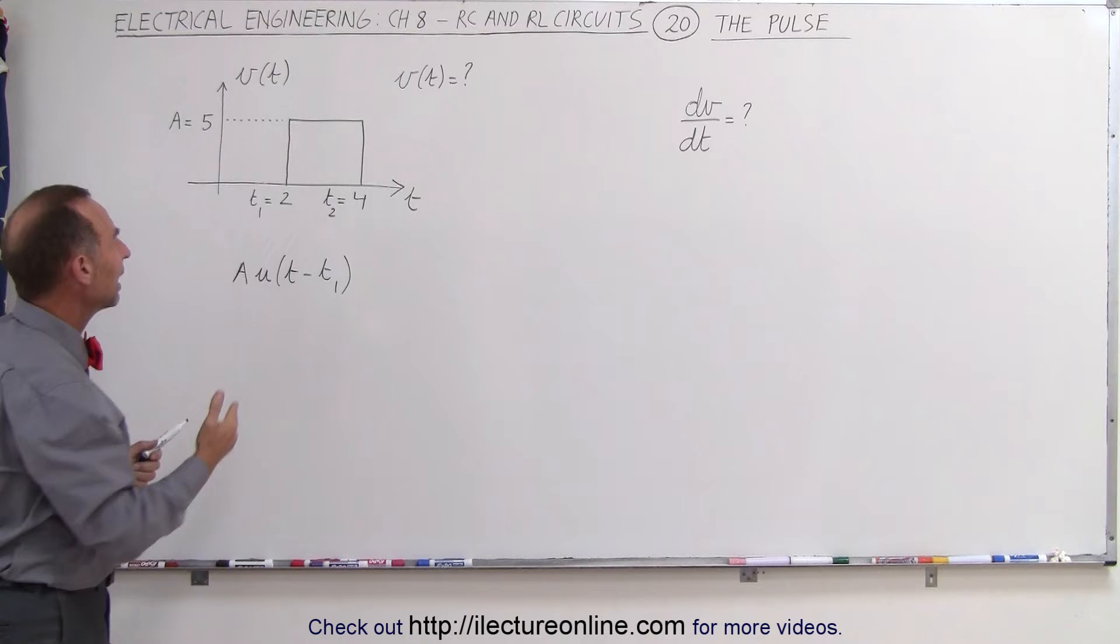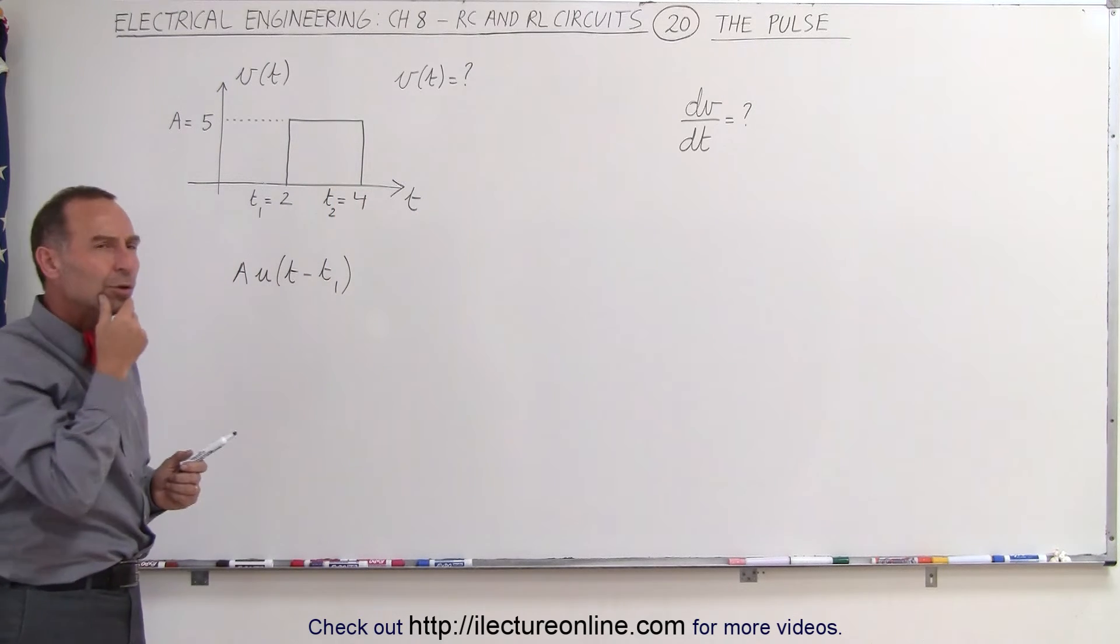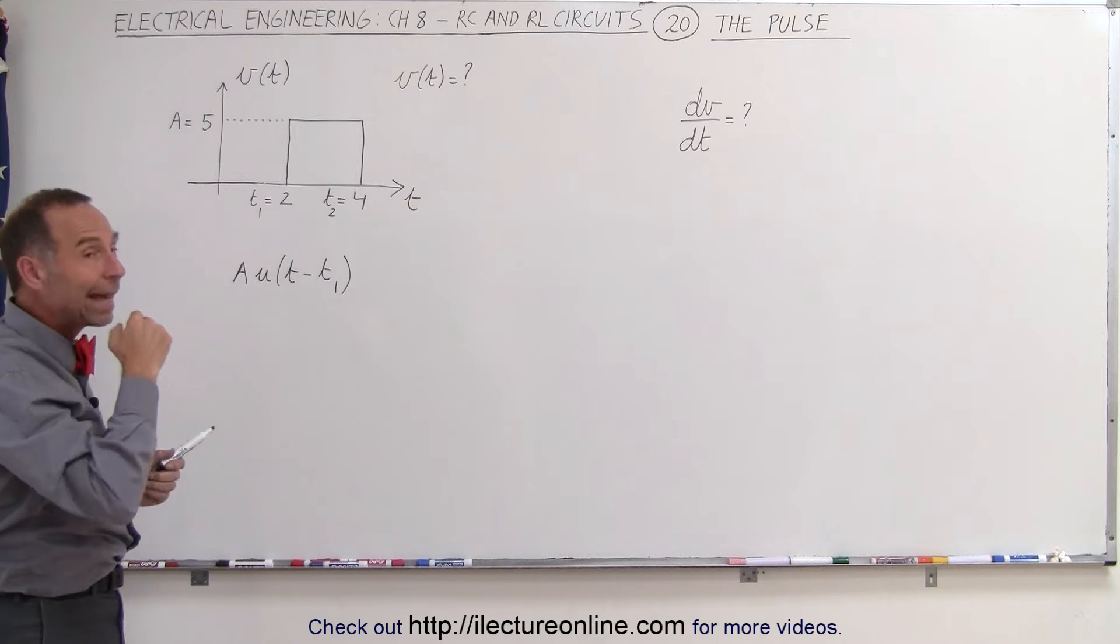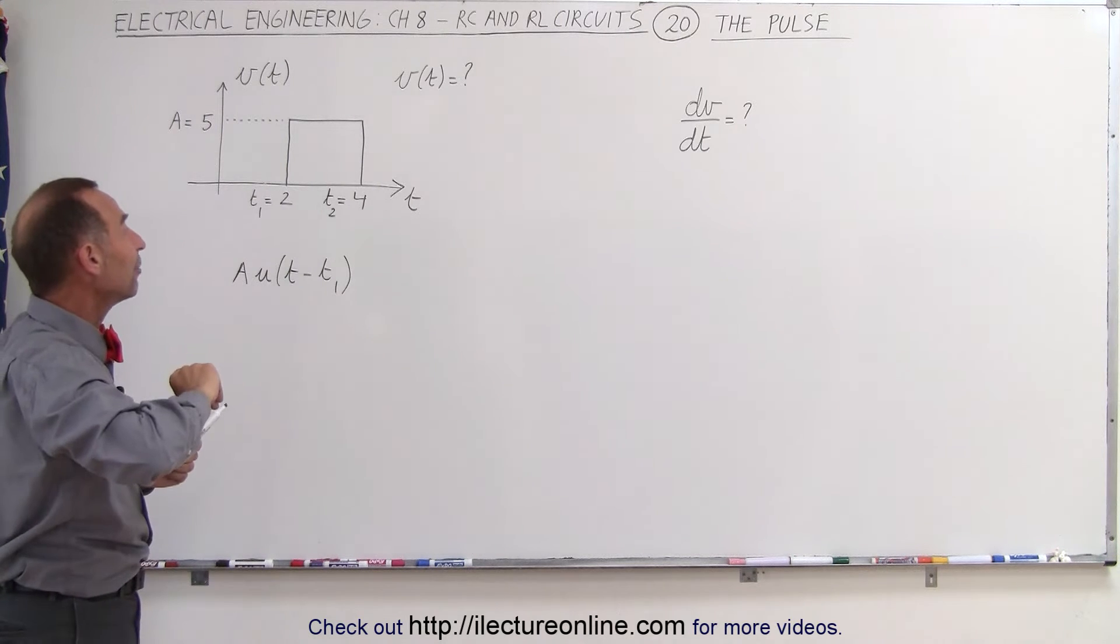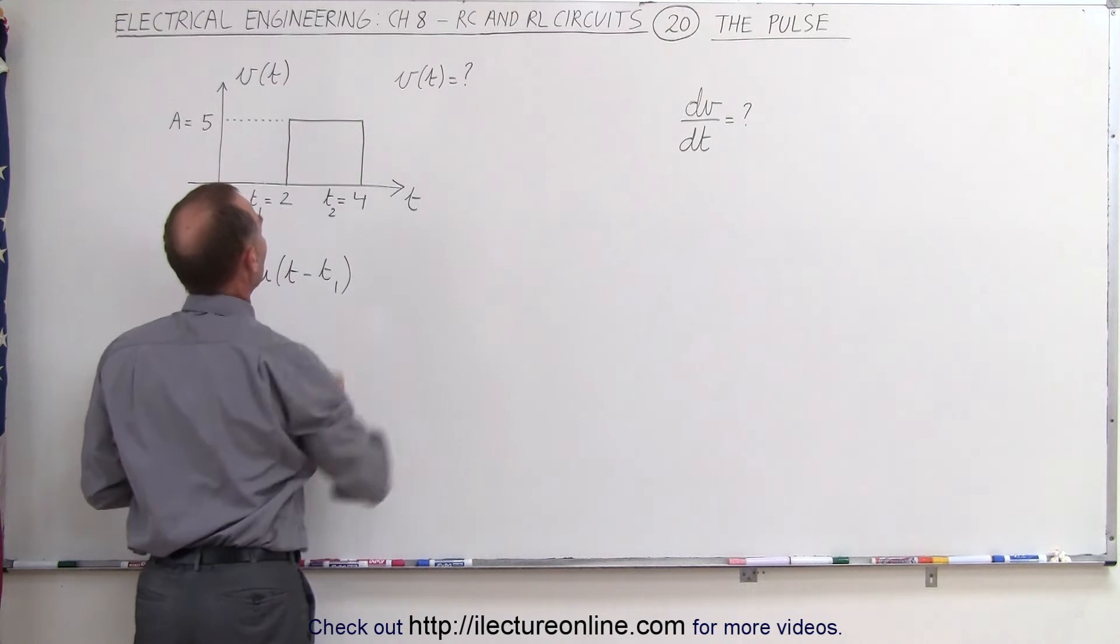Of course it doesn't do that here. After two seconds it goes back down to zero. How can we do that? Well, we can do that by adding another step function, a negative step function that will subtract this portion from the first step function.